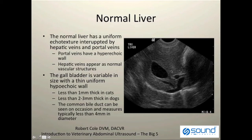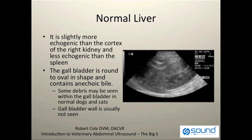The gallbladder is variable in size and typically has a very thin wall — reported to be less than one millimeter thick in cats and usually less than two to three millimeters thick in dogs. The common bile duct can be seen on occasion and typically measures less than four millimeters in diameter. The liver parenchyma is typically about the same echogenicity as the right kidney cortex, demonstrated in this image where we see the kidney in the renal fossa of the liver.